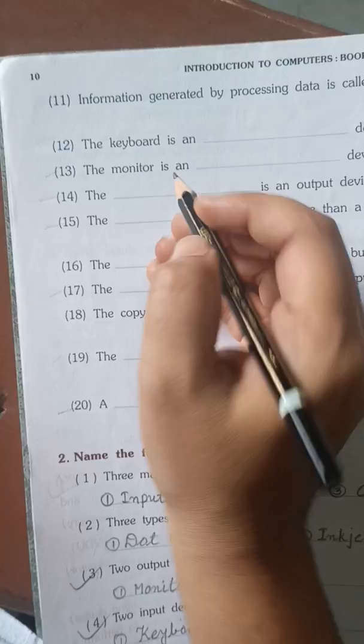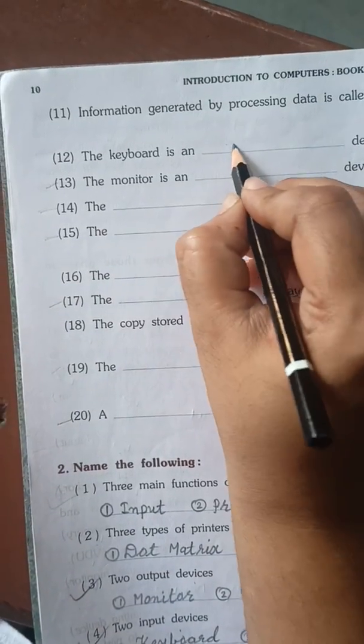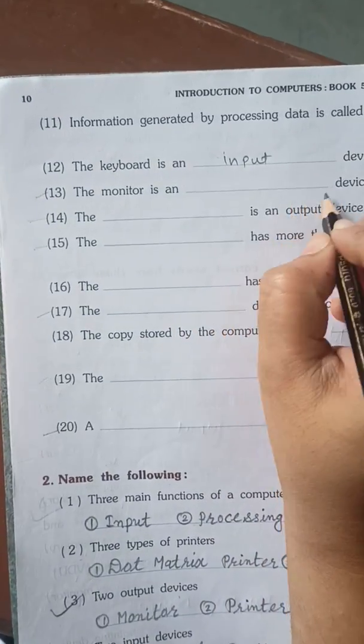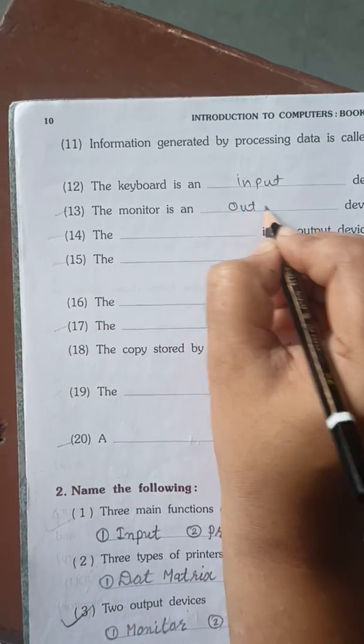The keyboard is an blank device, that is input device. The monitor is an blank device, that is output.